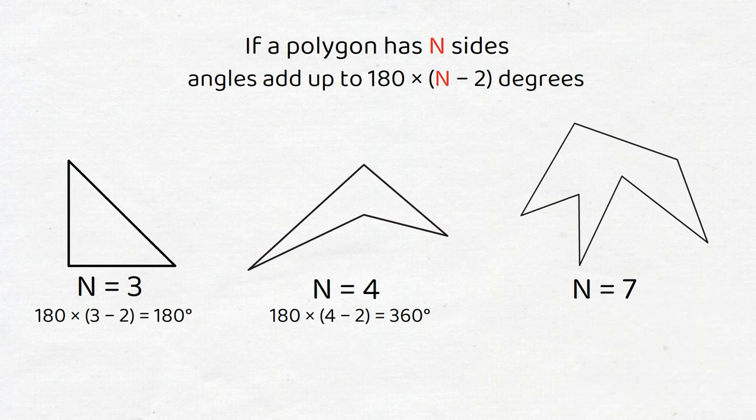For a 7-sided polygon with n = 7, its angle sum will be 180 × (7 - 2), which is 900 degrees.